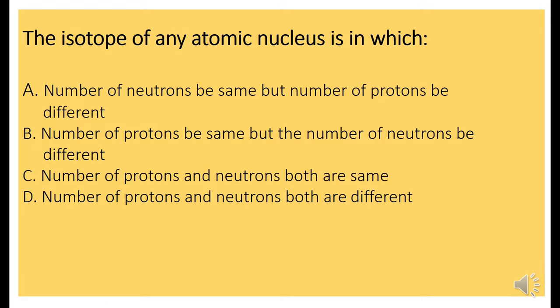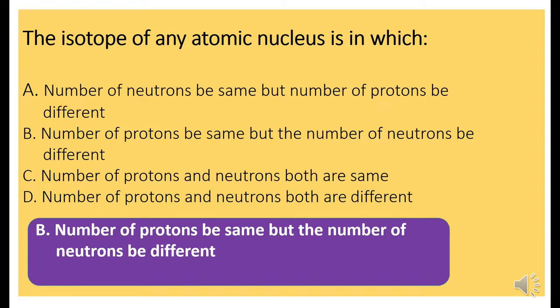Next question. The isotope of any atomic nucleus is. The right answer is Option B, Number of protons be same but the number of neutrons be different.